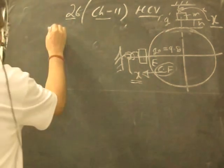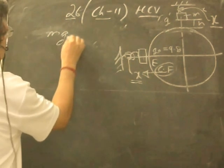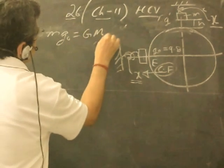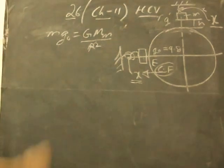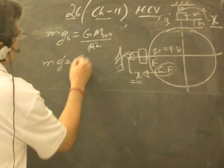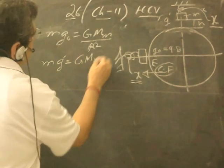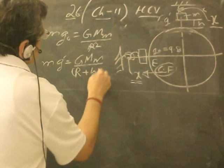We know that Mg₀ is equal to GMm upon R². At height H it would be Mg' is equal to GMm upon (R + H)².